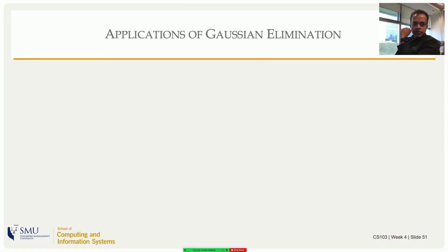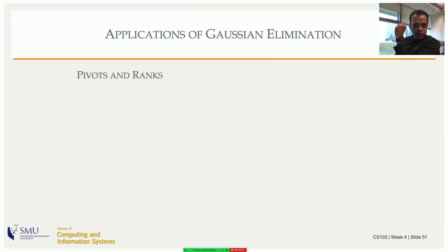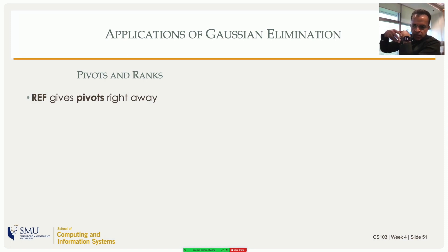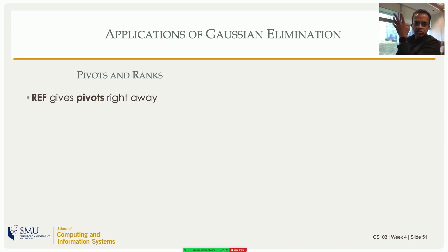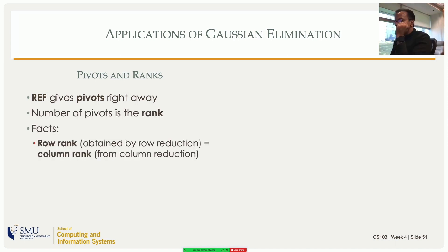The primary reason we do Gaussian elimination is to solve systems of linear equations, but along the way we also get pivots and ranks. The row echelon form (REF) gives you the pivots right away after row reduction, and the number of pivots is the rank — so rank is also given by Gaussian elimination.